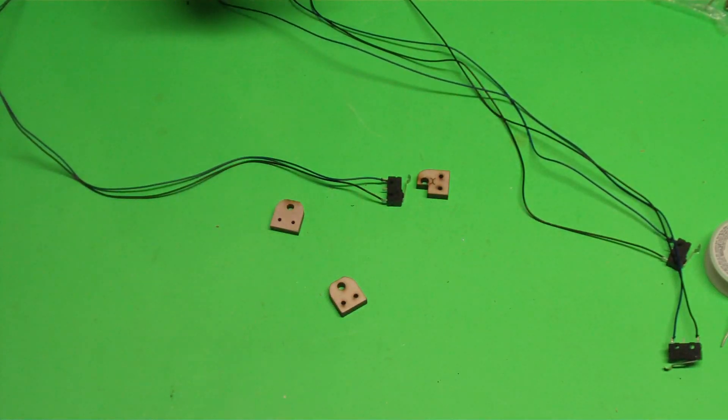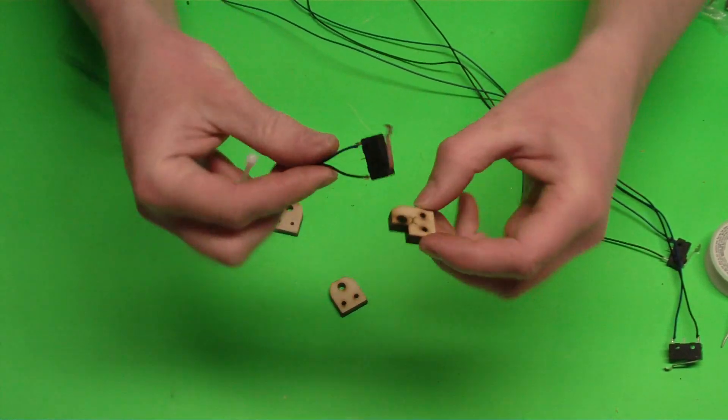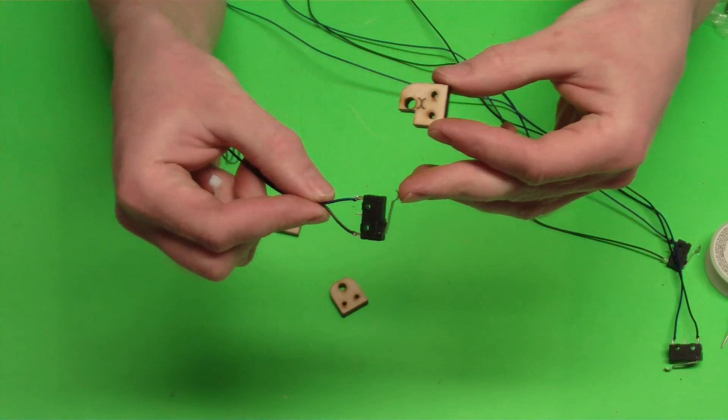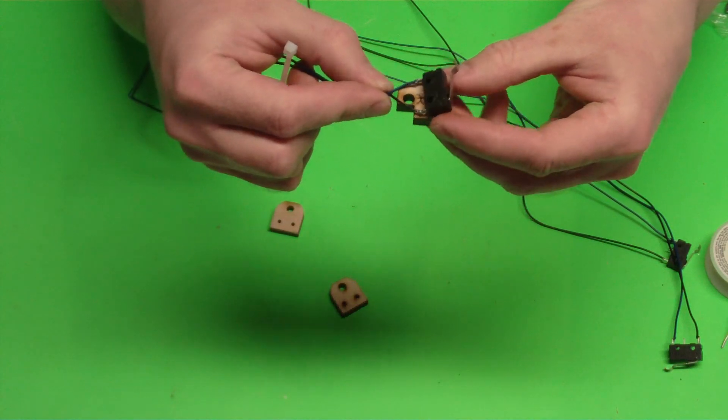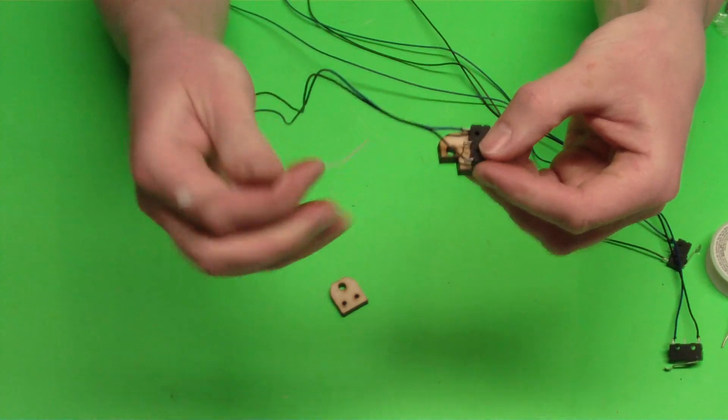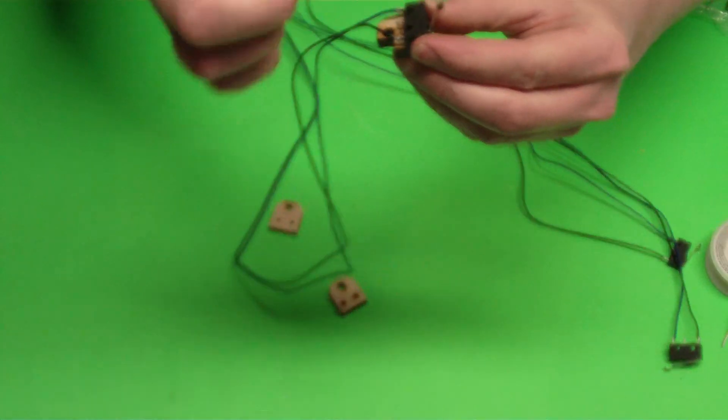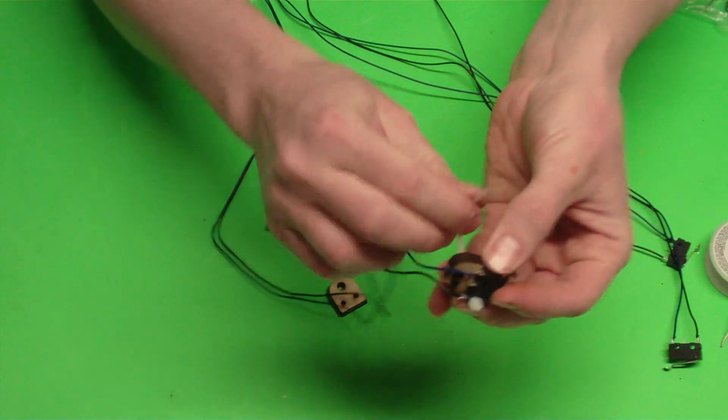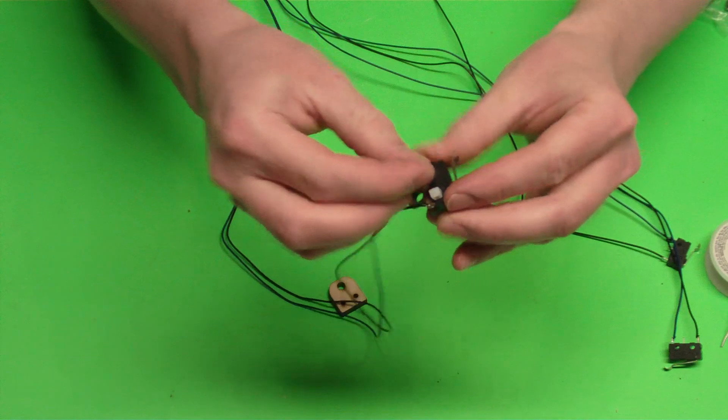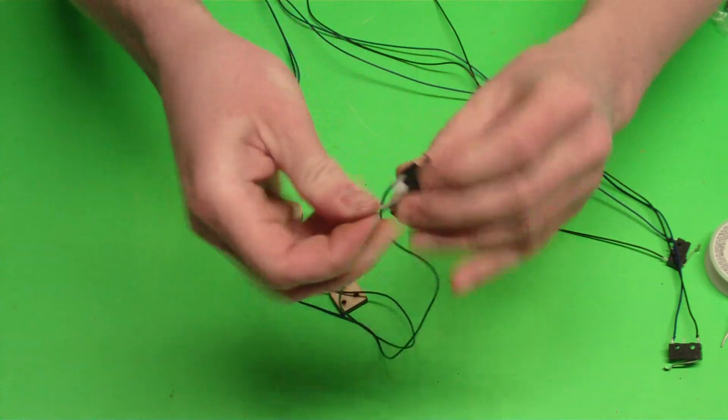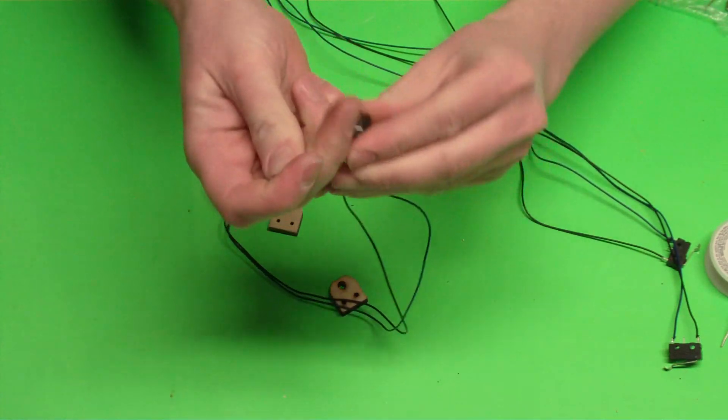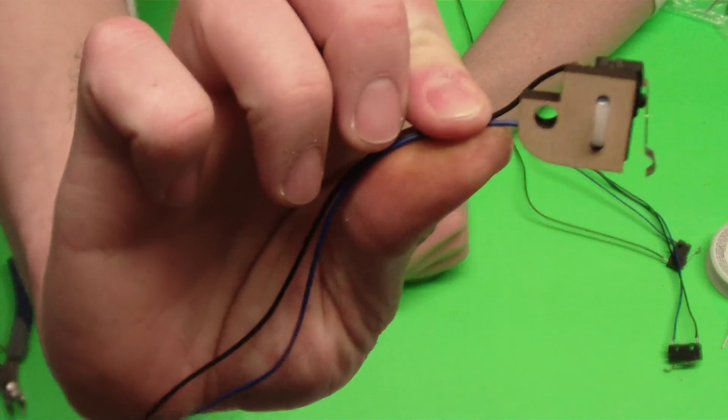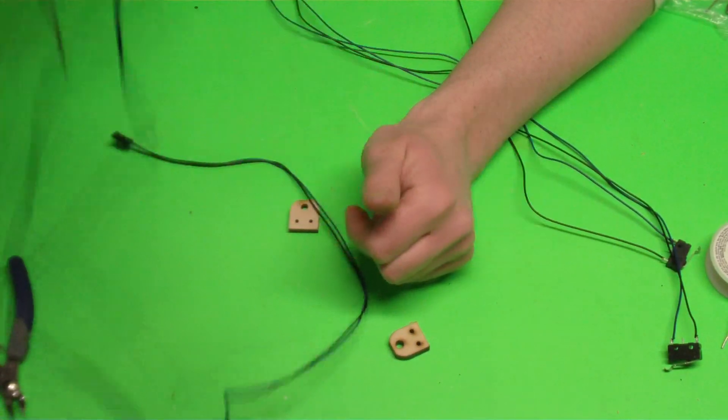We're going to get some zip ties and we're going to zip tie this in place. And basically the X axis, the leg that's farthest away is going to go on the opposite side of that cutout. So when it's assembled it'll go like that. We just put our zip tie in. Cut off the excess part of the zip tie and that is our assembled X axis end stop.